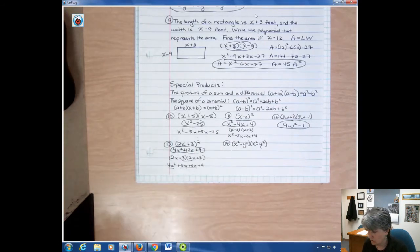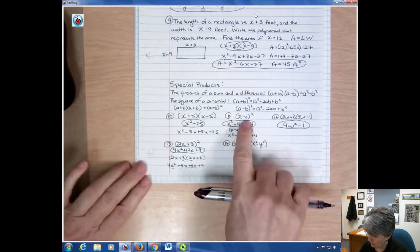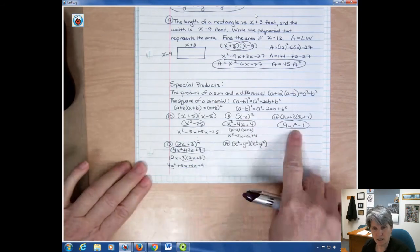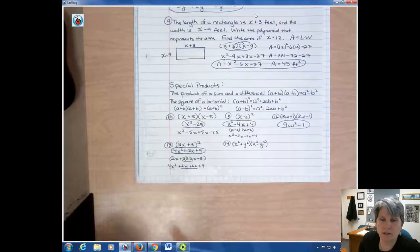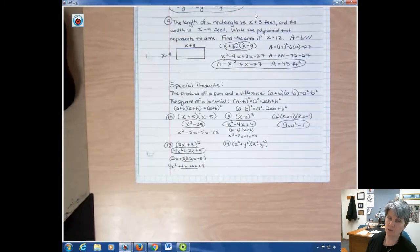What people tend to do is see something like this and write something like that. Like they take something that's a square and they use the rule for the sum and the difference. So be careful about using shortcuts.